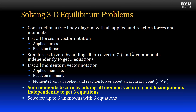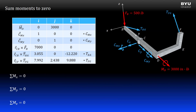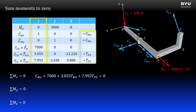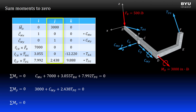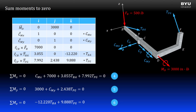Now we sum moments to zero by adding all moment vector i, j, and k components independently to get three equations. I sum x-direction components to zero by adding all the nonzero terms in my i component column, including the moment magnitudes. I sum y-direction components to zero by adding all the terms in my j component column, and I sum z-direction components to zero by adding all the terms in my k component column. I will name these equations 4, 5, and 6.